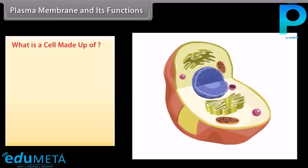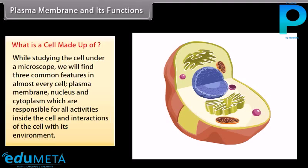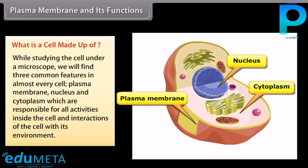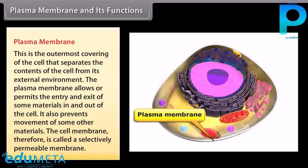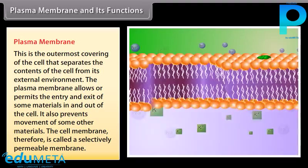Plasma membrane and its functions: While studying the cell under a microscope, we find three common features in almost every cell — plasma membrane, nucleus, and cytoplasm — which are responsible for all activities inside the cell and interactions with its environment. The plasma membrane is the outermost covering of the cell that separates the contents of the cell from its external environment. It allows entry or exit of some materials while preventing others, and is therefore called a selectively permeable membrane.